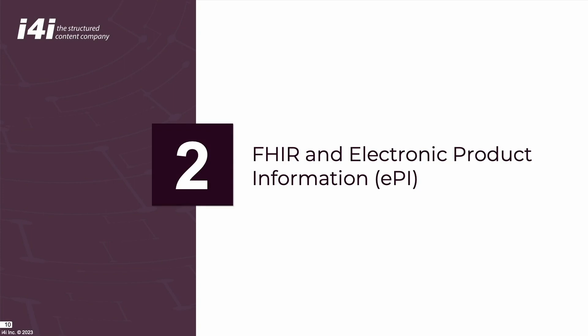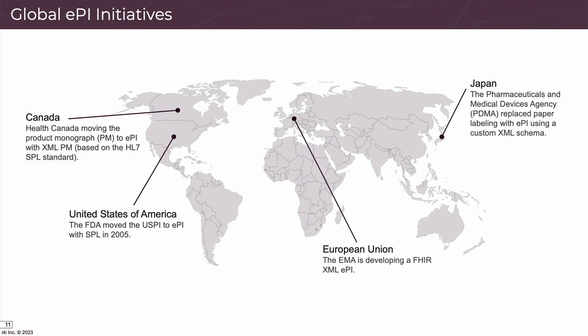Having product information in electronic format improves access and generally benefits everyone. While EPI has been used by some jurisdictions for quite a while, others are just starting to get on board. EPIs are currently in use or being developed all around the world. SPL is used in the United States and Canada, where they're calling the files XML PMs. Japan's Pharmaceuticals and Medical Devices Agency replaced paper labeling with a custom XML format. In the EU, the EMA has a pilot in progress and has just published their first two EPIs. Many other jurisdictions such as Jordan, Brazil, and Malaysia are also adopting EPI.